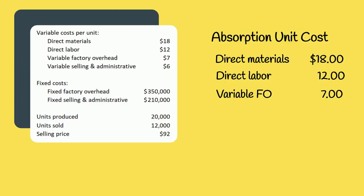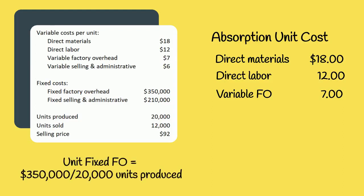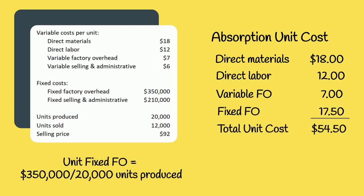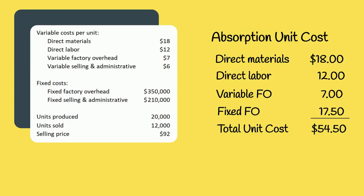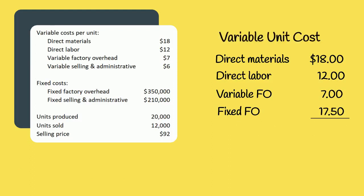We take this fixed cost and turn it into a per unit cost of seventeen dollars and fifty cents. We add all these up and get a total unit product cost of fifty-four dollars and fifty cents under absorption costing.